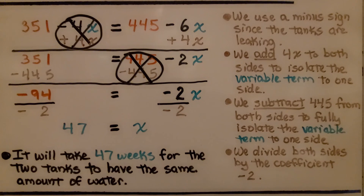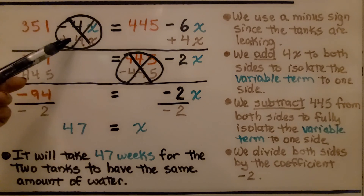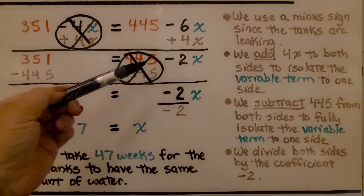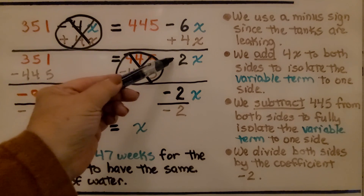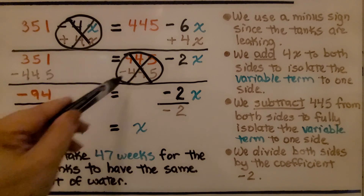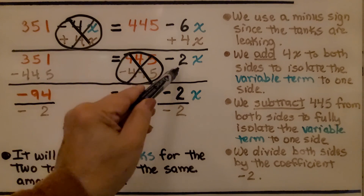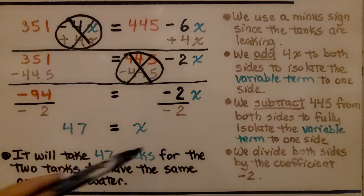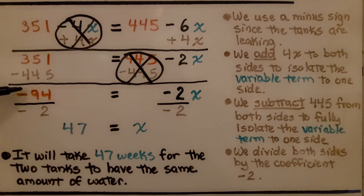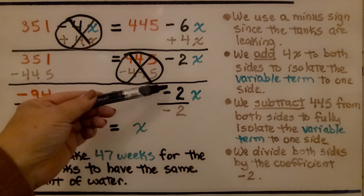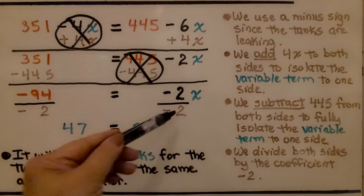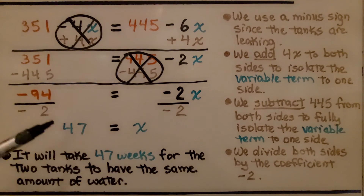It will take 47 weeks for the two tanks to have the same amount of water. I started by removing the variable term that put us into a negative 2. I then removed the constant term from one side to get the variable term alone, ending up with negative 94 on one side and negative 2x on the other. Dividing both sides by the coefficient negative 2 gave us positive 47 for x.